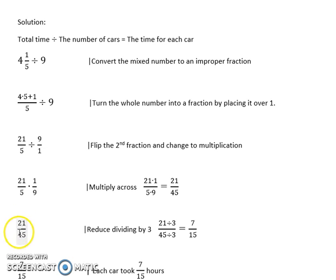A fraction that we can reduce because there are common factors. If we divide both the numerator and denominator by the same number, we get an equivalent simplified fraction. Here we'll divide both numerator and denominator by three, giving us the reduced fraction 7 over 15. 21 divided by 3 is 7, 45 divided by 3 is 15. This fraction cannot be reduced further.